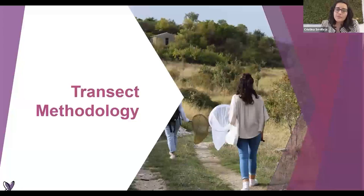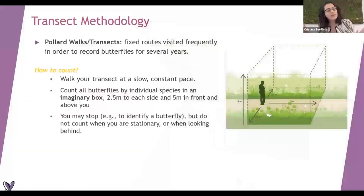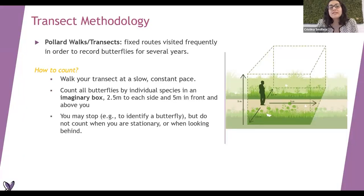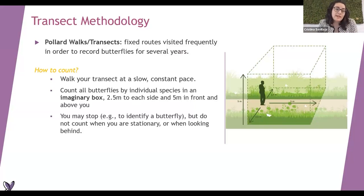Now I will explain more about how to do this transect methodology. So how exactly can you do the transect - I just want to explain how easy it is so you can start doing it soon if you want. The transect, or Pollard walk as it is also called, is basically a fixed route that you decide to have, record butterflies on, and then visit frequently during several years.